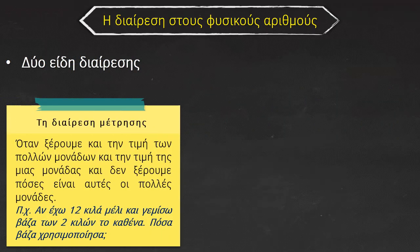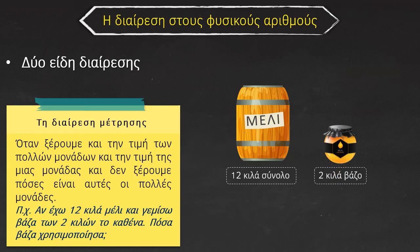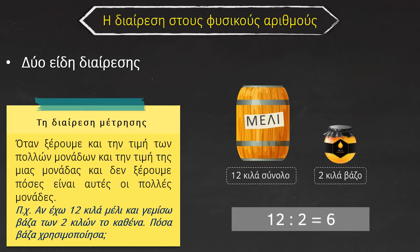Το δεύτερο είδος διαίρεσης είναι η διαίρεση μέτρησης. Όταν ξέρουμε δηλαδή την τιμή των πολλών μονάδων και την τιμή της μίας μονάδας και δεν ξέρουμε πόσες είναι αυτές οι πολλές μονάδες. Παραδείγματος χάρη, αν έχω 12 κιλά μέλι και γεμίσω βάζα των 2 κιλών το καθένα, πόσα βάζα χρησιμοποίησα. Εδώ έχω το μέλι που συνολικά είναι 12 κιλά και τα βαζάκια που κάθε βαζάκι παίρνει 2 κιλά. 12 που είναι τα κιλά σύνολο για 2 κιλά σε κάθε βαζάκι, θα χρειαστώ 6 βαζάκια.